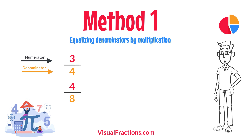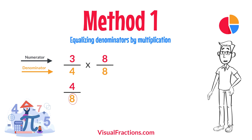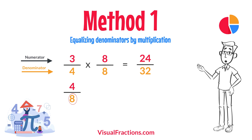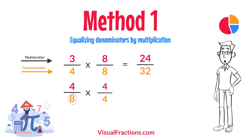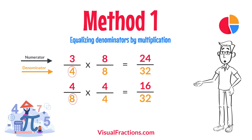For three quarters, multiply both the numerator and the denominator by eight — the denominator of four eighths. This gives us 24/32. For four eighths, multiply both the numerator and the denominator by four — the denominator of three quarters. This results in 16/32.